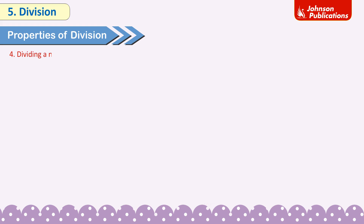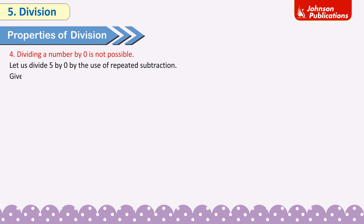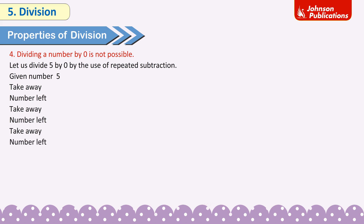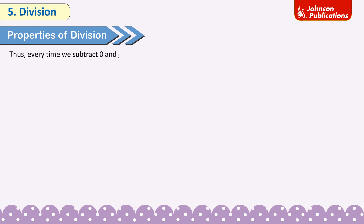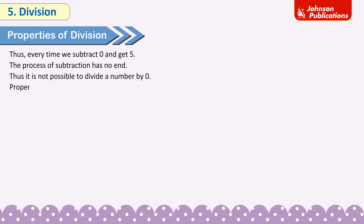Property 4: Dividing a number by 0 is not possible. Let us divide 5 by 0 using repeated subtraction. Given number: 5. Take away 0 — number left is 5. Take away 0 again — number left is 5. And so on. Every time we subtract 0 we get 5. The process of subtraction has no end. Thus, it is not possible to divide a number by 0. Dividing a number by 0 has no meaning.